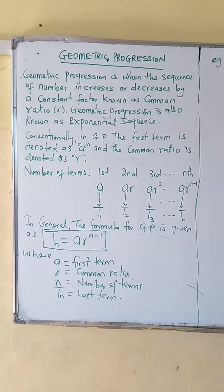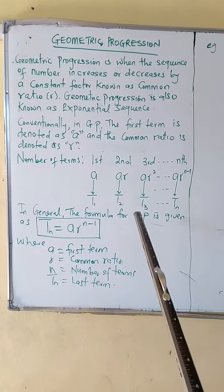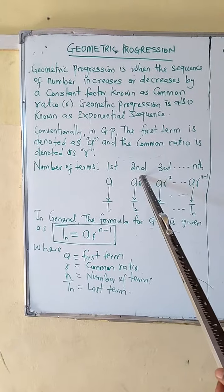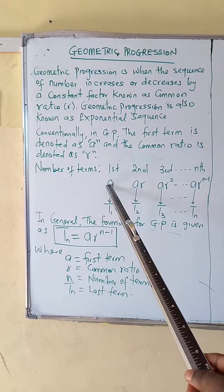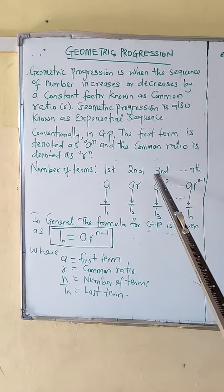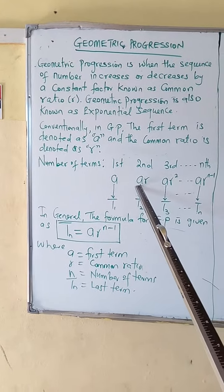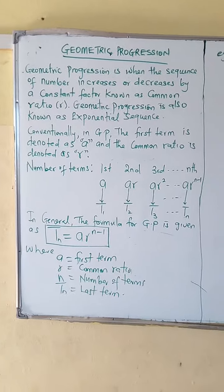Keep note that the second term is obtained by multiplying the first term with the common ratio. Third term is obtained by multiplying the second term with the common ratio, and in that order.